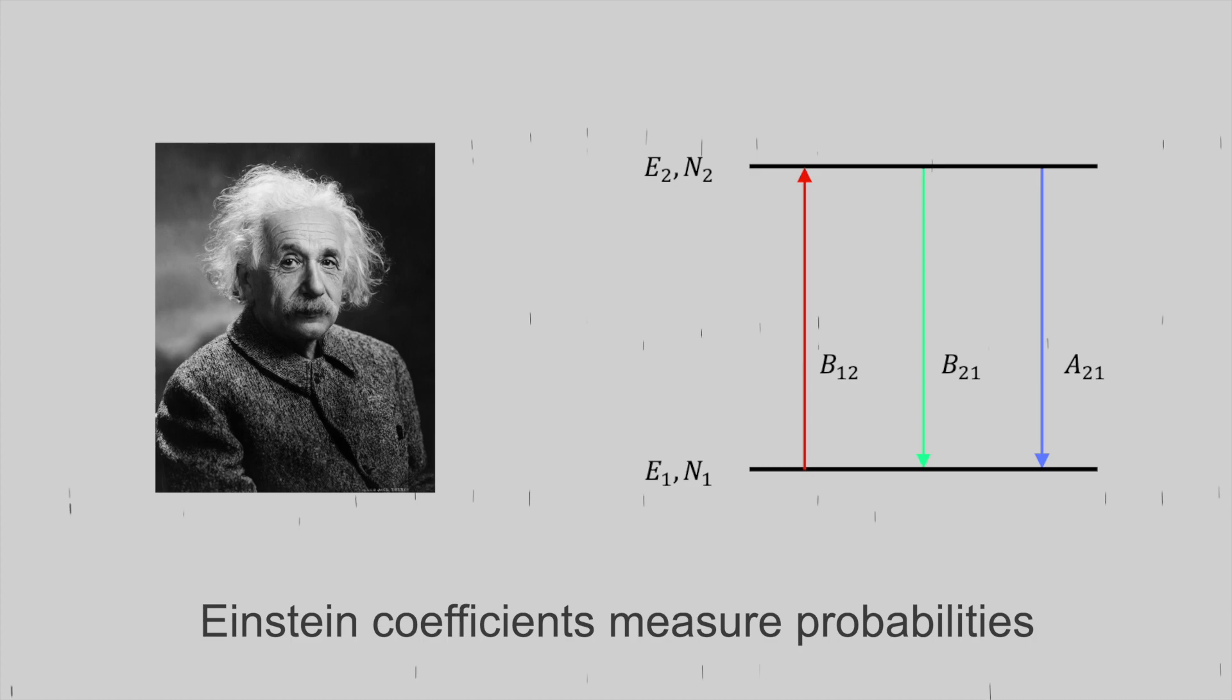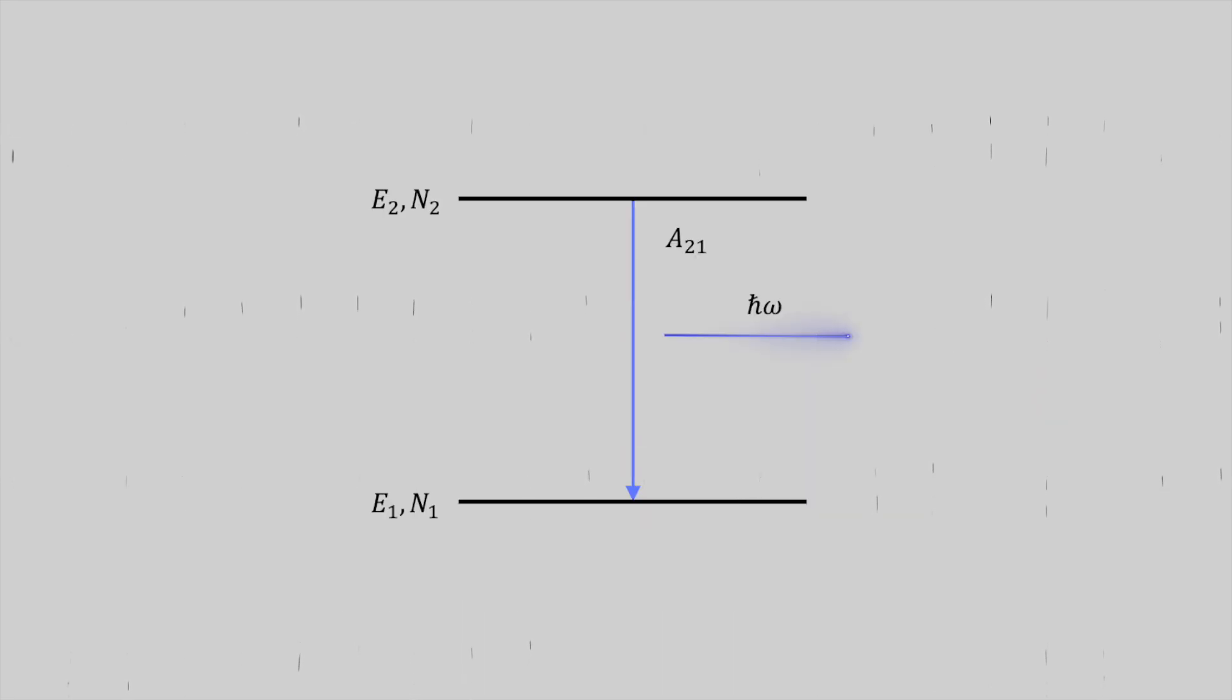Now the Einstein coefficients measure the probabilities of a particular process occurring. Important now is that next to the energy levels, we're also looking at the population N1 and N2. Spontaneous emission can be described as A21, and we don't need to look at this further.